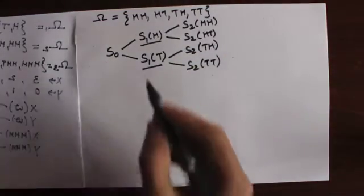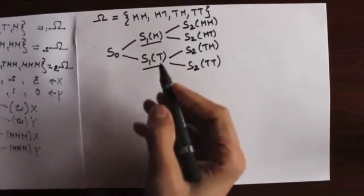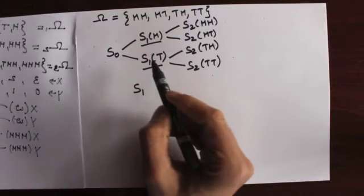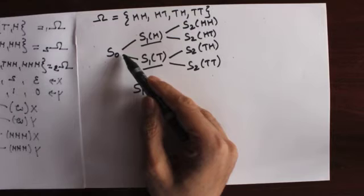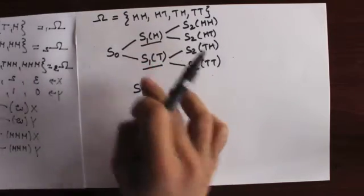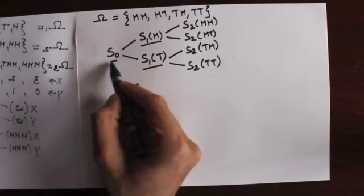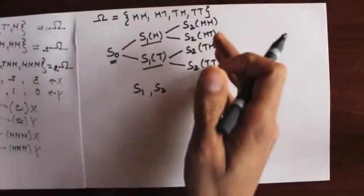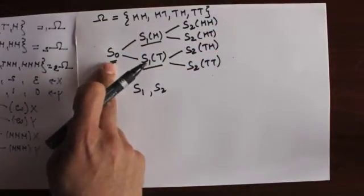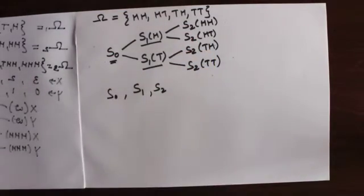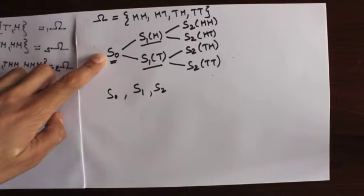The value of the stock at time one, s1, is a random variable because it depends on whether the first coin toss is a head or a tail — if it's a head the value is s1h, if a tail it's s1t, and we don't know the outcome at time zero. Similarly, s2 is random because it depends on both coin tosses, and again we don't know how they'll turn out at time zero.